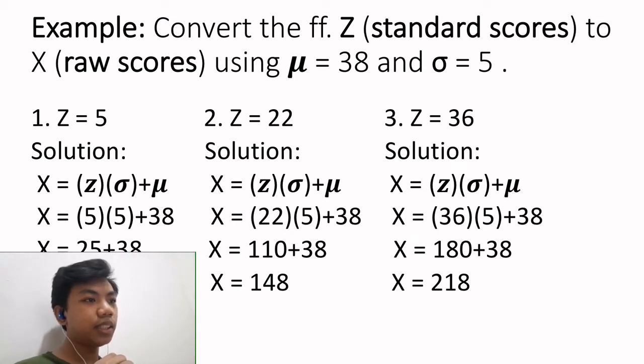Number 3, z equals to 36. x equals to 36 times 5 plus 38. 36 times 5 equals to 180 plus 38 equals to 218.